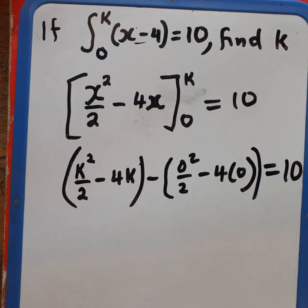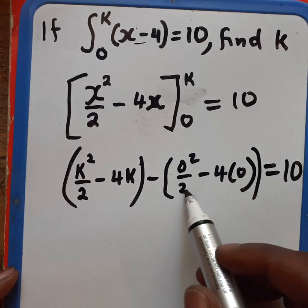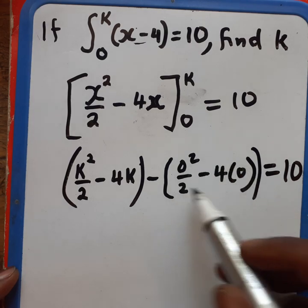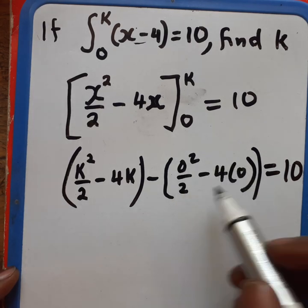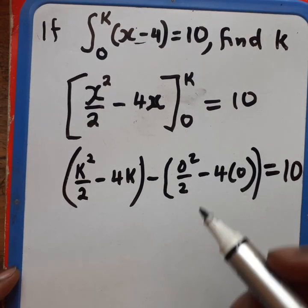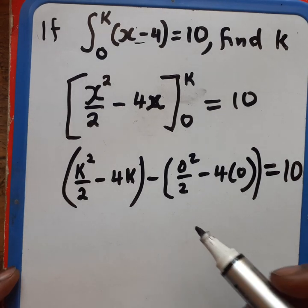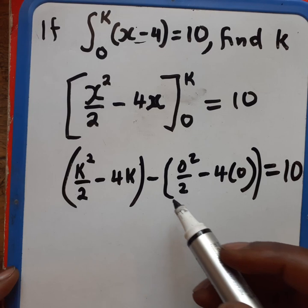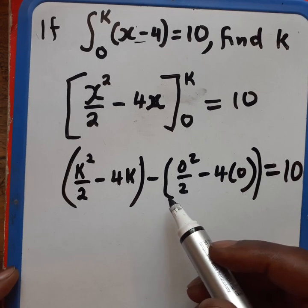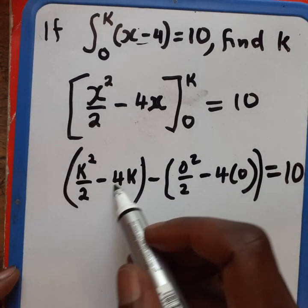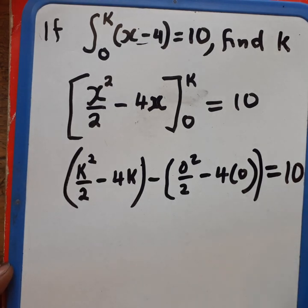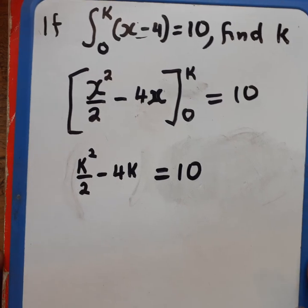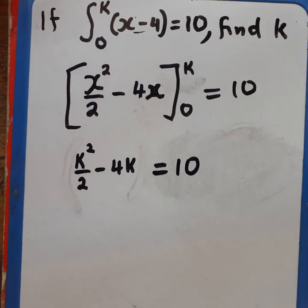Now, as you may know, when we work out this part here, it is going to give us 0 because we have a 0. So this whole thing here is going to be 0. So it is better we work with this part alone. So we can get rid of this part here. So this is what we are going to have.